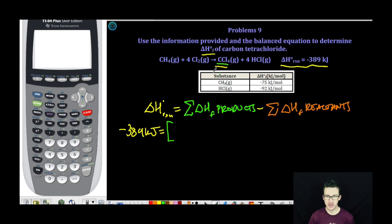I'm going to sum together the enthalpies of formation of my products. My first product here, CCl4, that is what I'm looking for. So it's one mole times X plus four moles times negative 92. So those are my products.